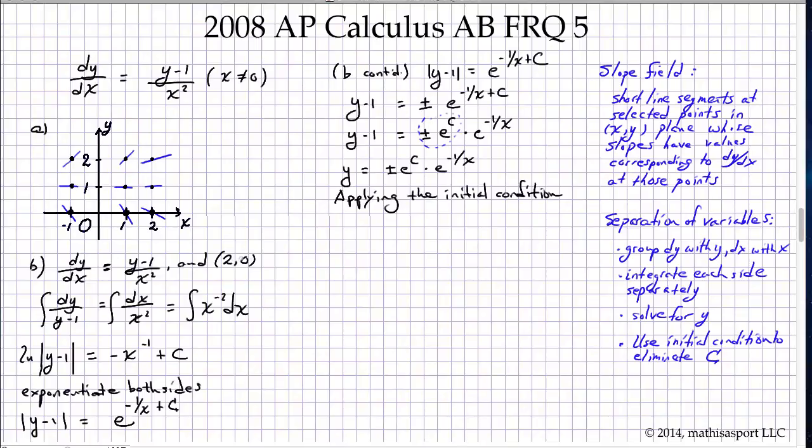We have 2 comma 0 as our point. So in other words, 0 equals plus or minus e to the c times e to the negative 1 half. I left out the plus 1 here when I made this transition. Let me put it back in. Plus 1. So notice I placed the 2 in for the x value and the 0 in for the y value.